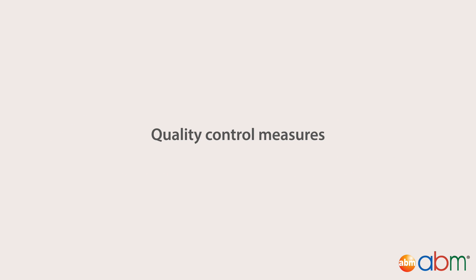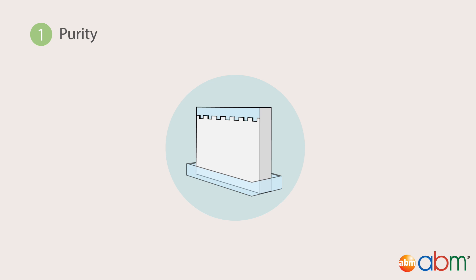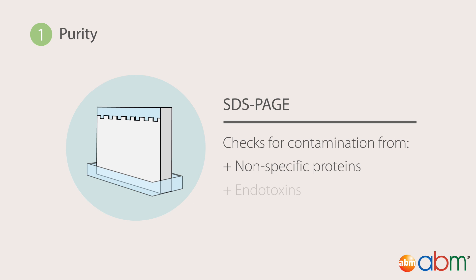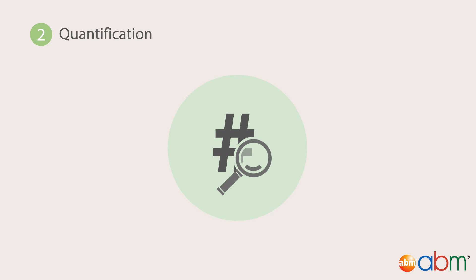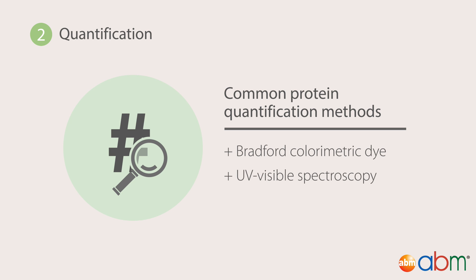High-quality growth factors must pass vigorous quality control testing for purity, quantification, and activity. Purity tests such as SDS-PAGE can determine whether or not the product is contaminated with nonspecific proteins and or endotoxins that can trigger undesirable effects such as cell differentiation. Quantification is used to achieve product size and results. Commonly used protein quantification methods are Bradford colorimetric dye, UV visible spectroscopy, and densometric comparison.